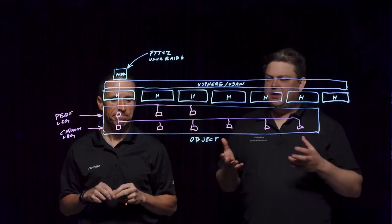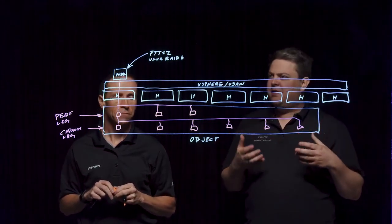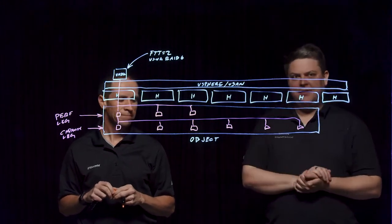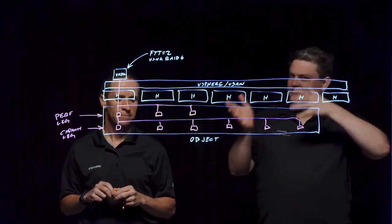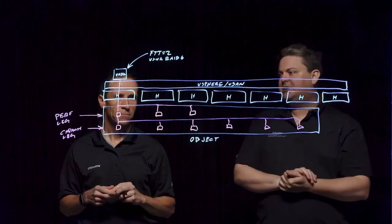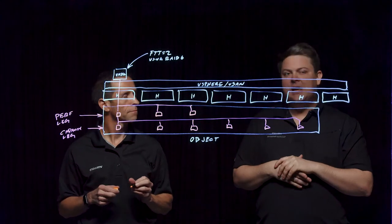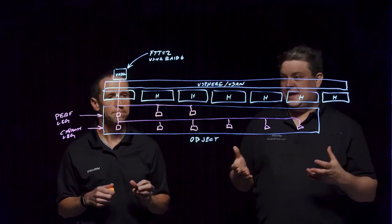There's some other benefits to this. Previously with RAID 5 or RAID 6, you had this read, write, modify cycle, and that added latency, that added time, that added additional network hops in our distributed system versus always doing a full stripe update. Simplifying that down reduces the amount of IO amplification.